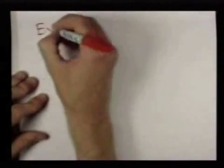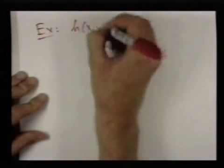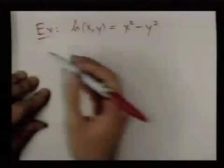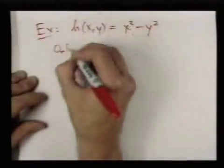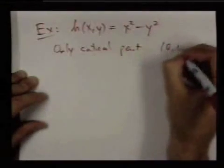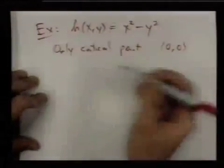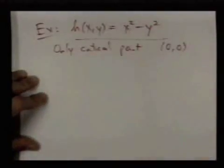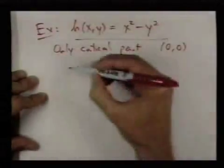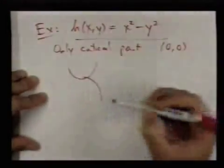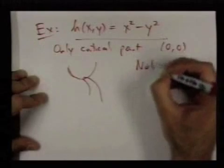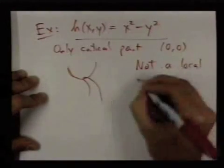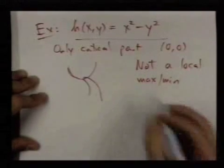A non-example is the function h(x,y) is x squared minus y squared. If you go through the same argument, the only critical point of this is (0,0) again. But this function has what's called a saddle point. We already know what the graph of this looks like. It's this hyperbolic paraboloid. The graph's kind of hard to draw, but it's sort of this saddle shape. So the only critical point is (0,0). It's not a local max or min. Instead, it's what we call a saddle point.